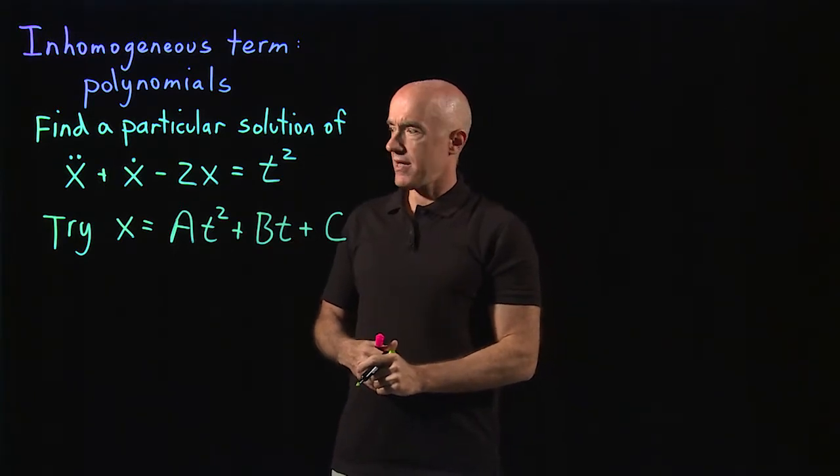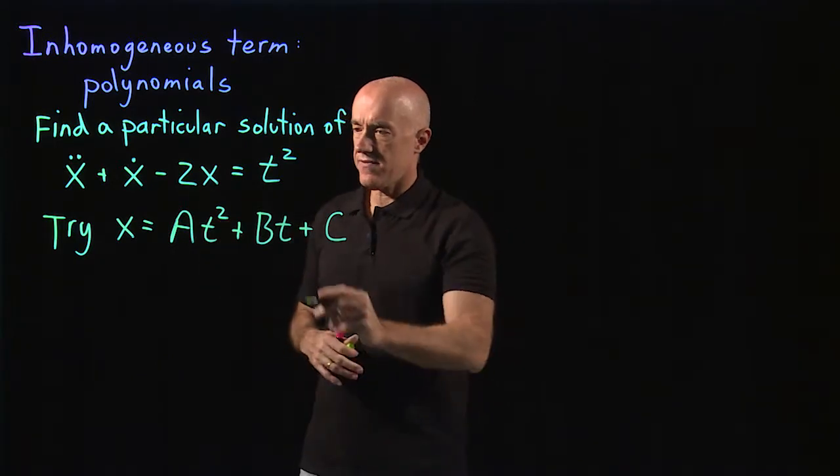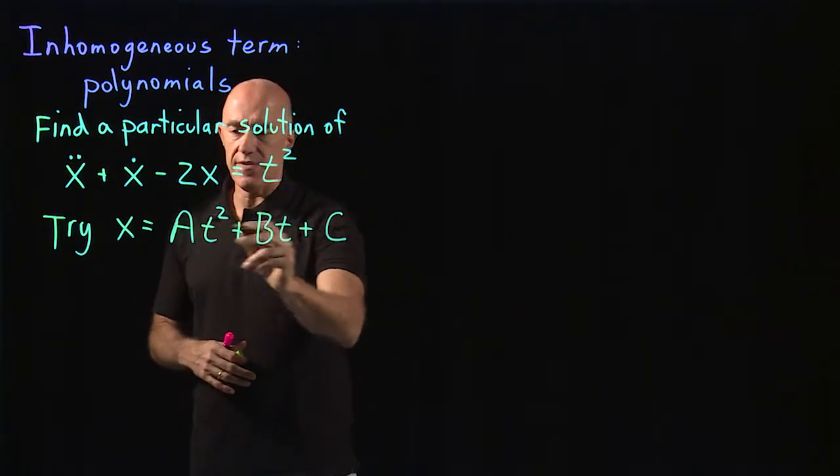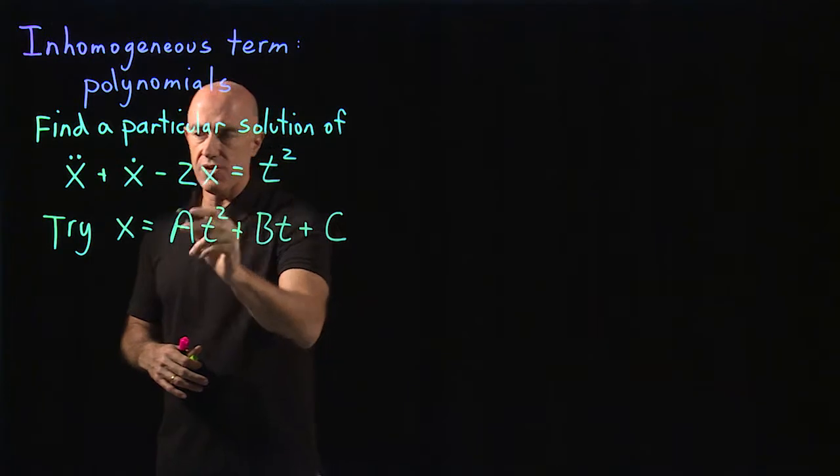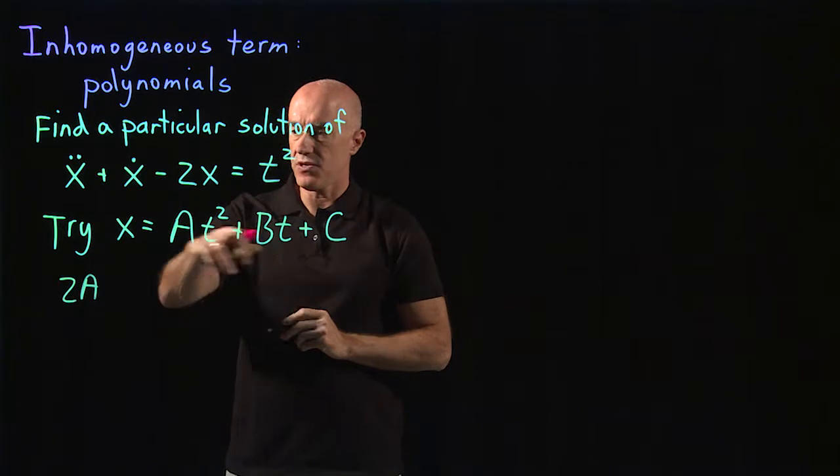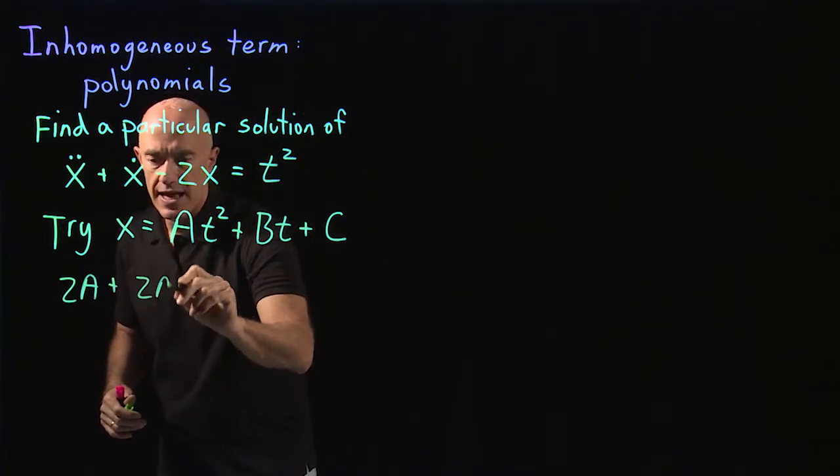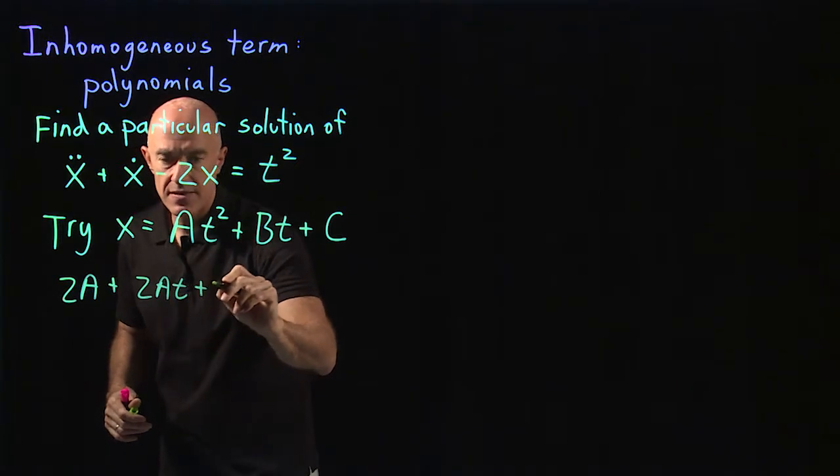So when you substitute in, you have to take the second derivative. So the second derivative here of this polynomial will just give us 2a, and then plus the first derivative, the first derivative gives us 2at plus b.